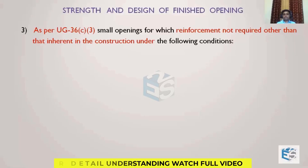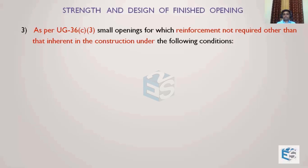As per UG-36C3, small openings in a vessel not subjected to rapid fluctuations of pressure do not require reinforcement other than that which is inherent in the vessel. If we have one shell with small openings, we don't have to provide any reinforcement calculation — whatever extra available thickness in the shell is sufficient. The code has given a waiver for small openings; we don't have to perform the reinforcement calculation, though some customers may still request it.